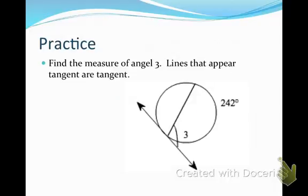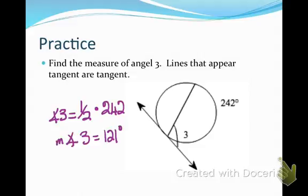All right, I want you to find the measure of angle 3. Well, I know that angle 3 is half of the intercepted arc, and the intercepted arc is 242. So half of 242 is 121 degrees.